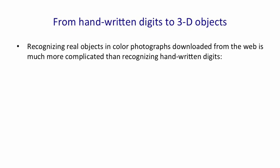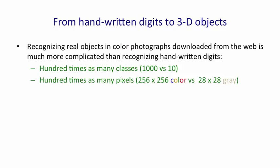Here are a number of reasons why it's a much more difficult task. First, there are many more different kinds of objects — even if we only recognize 1,000 classes, that's still a factor of 100. Secondly, there are many more pixels — even downsampled images of only 256 by 256 with color pixels are still 100 to 300 times as many pixels.